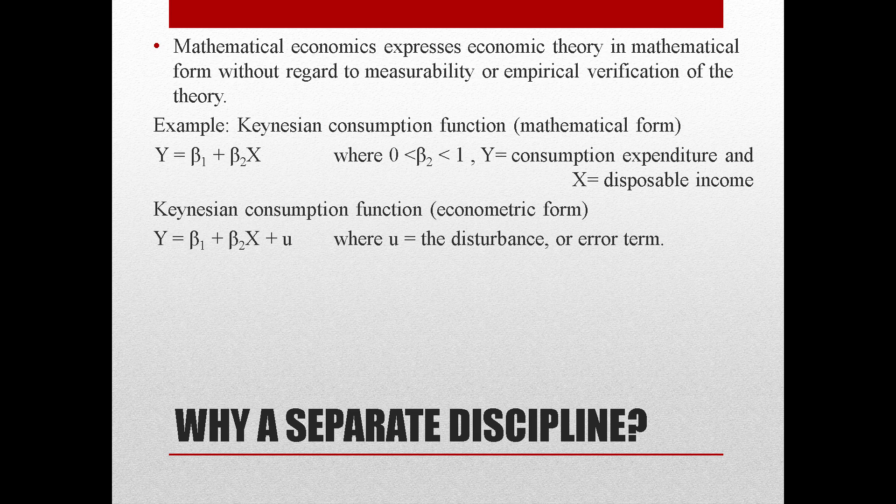So now we can say why we are not getting a straight line of the values of Y and X—because there are some other factors also that may affect the consumption expenditure. So this is how econometrics is helping us in empirically verifying the theories.